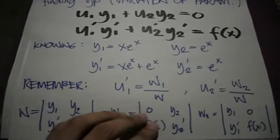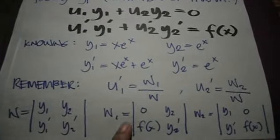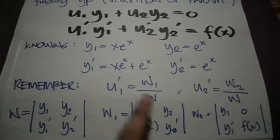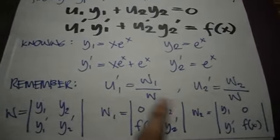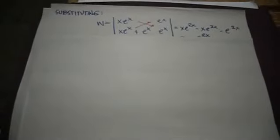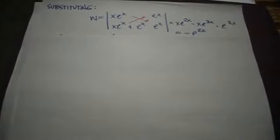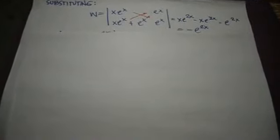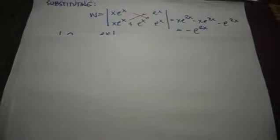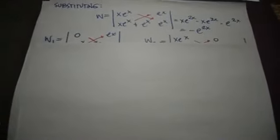First we need to find w1 and w2 to get u1 and u2, which is the integral of these equations. In getting the w first we substitute the given y1 and y2. Using the form we get w is equal to -e^(2x).